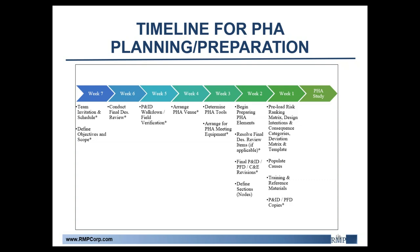In week six, you want to conduct final design reviews, especially for capital projects — you want to make sure you have the most up-to-date version of what you're planning going into the HAZOP study. For week five, we recommend doing a P&ID walk-down and field verification. This is such an important step for operating facilities because if you're not working off the most up-to-date P&IDs, you might be missing some major potential hazards that are actually out there in the field but not written down on paper.